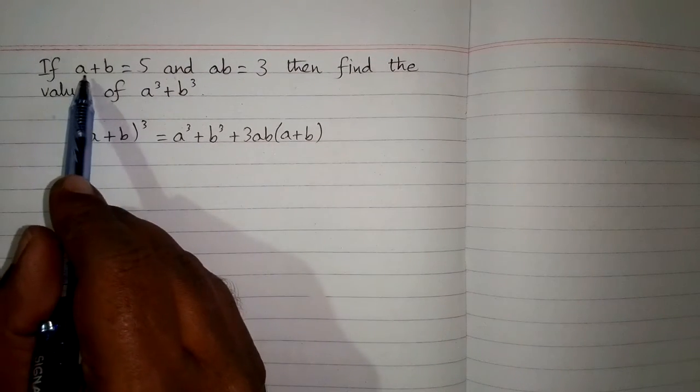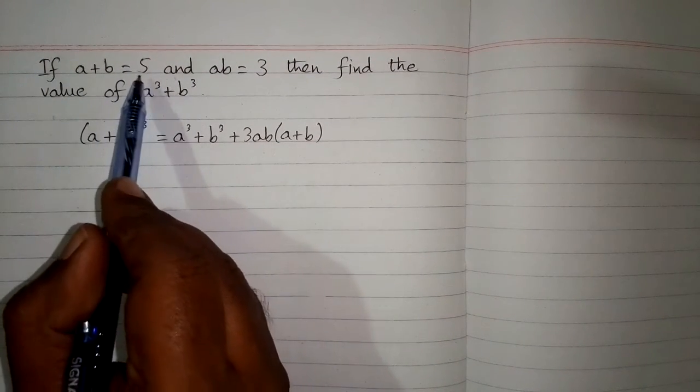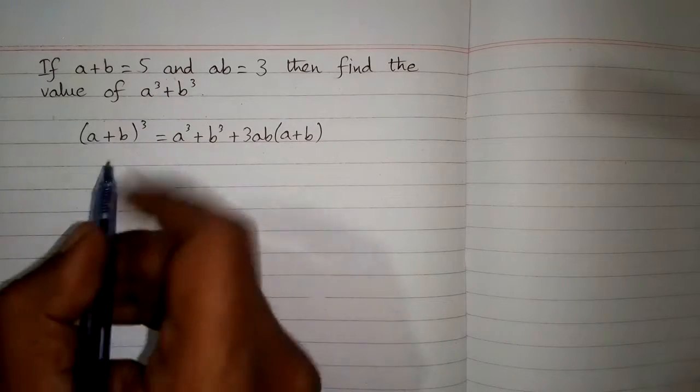It is given that a plus b is equal to 5, so we put the value of 5 in place of this a plus b.